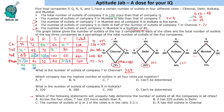The second question asks which company has the highest number of outlets across all four cities combined. P is either 192 or 196 in our scaled table. S is definitely 218. T is at most 140 plus 68 equals 208 or as low as 204. So S has the highest number of outlets across all four cities.